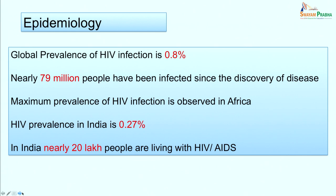The global prevalence of HIV infection is about 0.8%. Since the discovery of the disease, nearly 79 million people have been infected and almost 50% have died. The maximum prevalence is in Africa. In India, HIV prevalence is about 0.27%, with nearly 20 lakh people living with HIV or AIDS. Higher prevalence is seen in states like Tamil Nadu, Karnataka, Andhra Pradesh, Maharashtra, and northeastern states like Manipur and Nagaland.